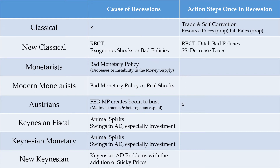For the new classicals, various subgroups would deal with different kinds of recessions in different ways. The real business cycle theorists would say if bad policies are driving us into a recession, get rid of those policies and let the economy correct itself — similar to the original classical side. The supply siders within new classical economics are very big on decreasing taxes. Taxes get in the way of trade; we want to decrease transaction costs and allow exchange to take place, since exchange is mutually beneficial and creates wealth. Decreasing taxes as much as possible can help push the economy forward.